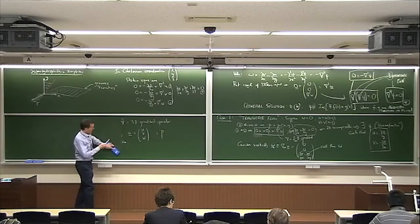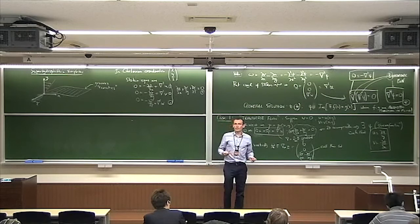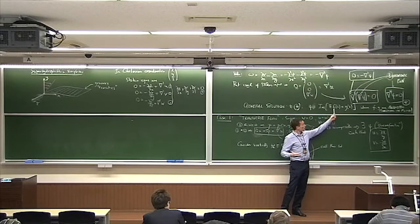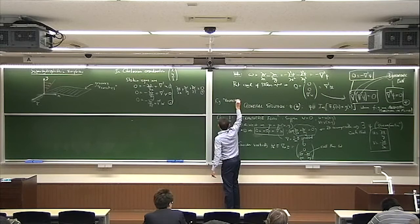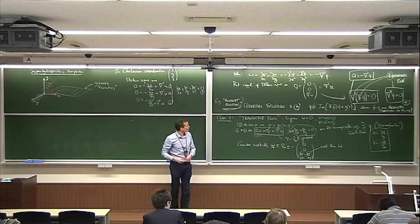I tend to call F and G complex potentials. If you're a solid mechanics person or study elasticity, you often see this more frequently than in Stokes flows — there, F and G are called the Goursat functions. That's just a historical thing; I just call them complex potentials. G-O-U-R-S-A-T.